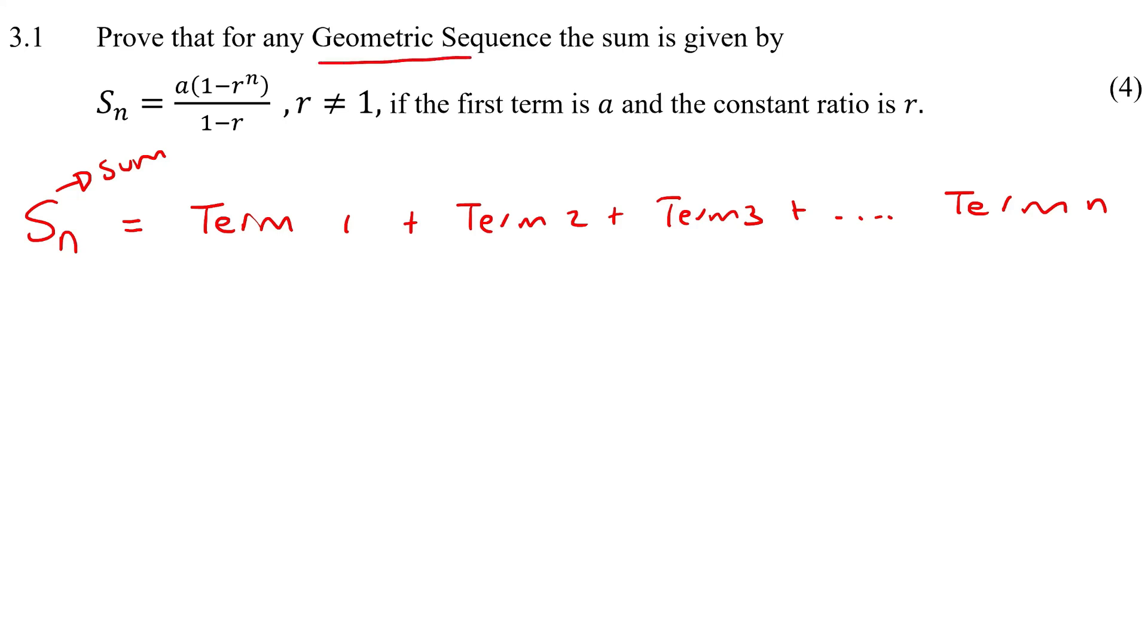Now because it's a geometric we know that the Tn formula goes like this. We know that term one is just a. We know that term two is just going to be ar to the two minus one.